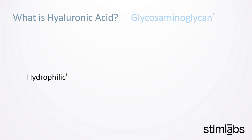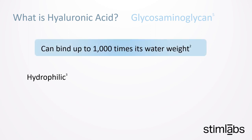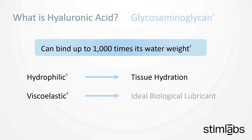It is hydrophilic, meaning it's a water-loving molecule that can bind up to 1,000 times its weight in water, which makes it an important factor in maintaining tissue hydration. HA is also viscoelastic, giving it special physical properties that allow it to resist compression and deformation from stretching. This is why it's considered to be the ideal biological lubricant found in high quantities in synovial tissue.